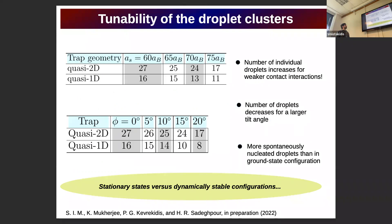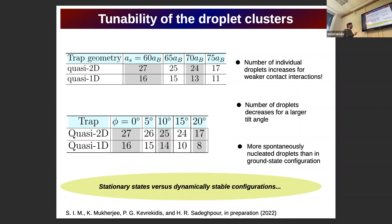Let me also say a few words about the tunability of the droplet clusters. Both in quasi-1D and quasi-2D, I show the number of droplets for different S-wave scattering lengths and for fixed S-wave scattering with tuning the tilt angle. In both cases, the number of droplets becomes larger as we decrease the S-wave scattering length, going deeper into the droplet regime. The same happens as you decrease the tilt angle because you increase the magnitude of the dipole-dipole interaction. Importantly, the number of nucleated droplets during the dynamics in the stationary configuration is larger than in the ground state configuration, hinting towards dynamically stable configurations which cannot be found in the ground state.